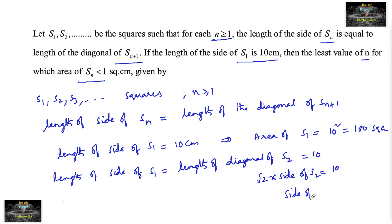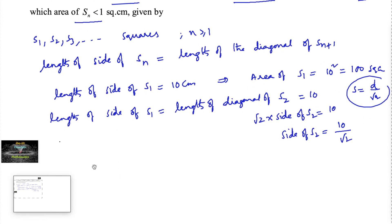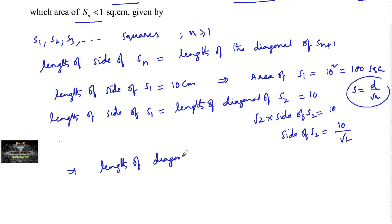Therefore, the side of s2 is equal to 10 divided by root 2. We can write the side as d divided by root 2. So 10 upon root 2 gives us the side of s2. This also means that the length of the diagonal of s3 is equal to 10 by root 2.